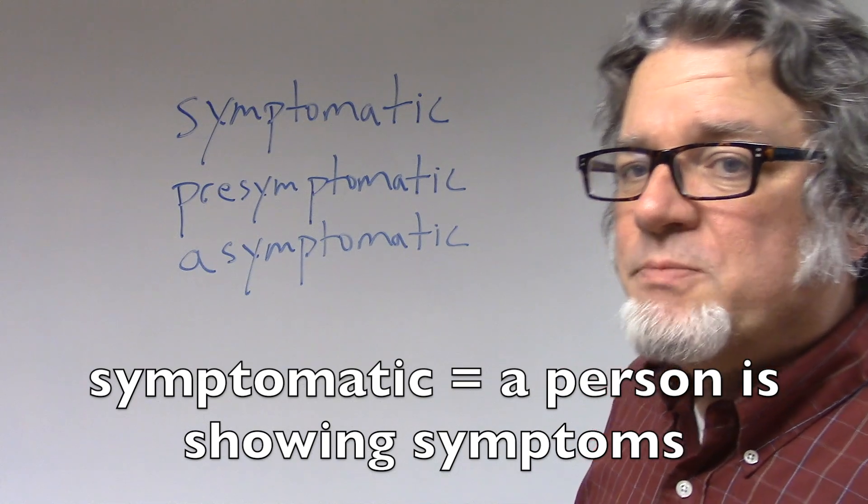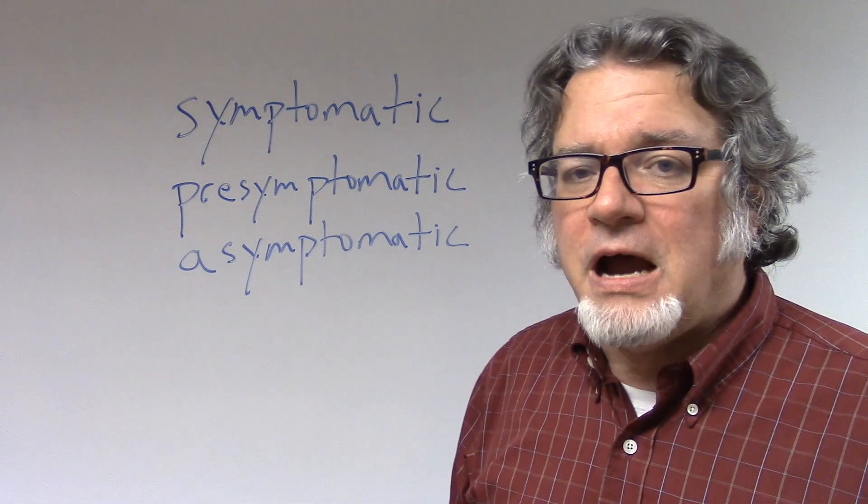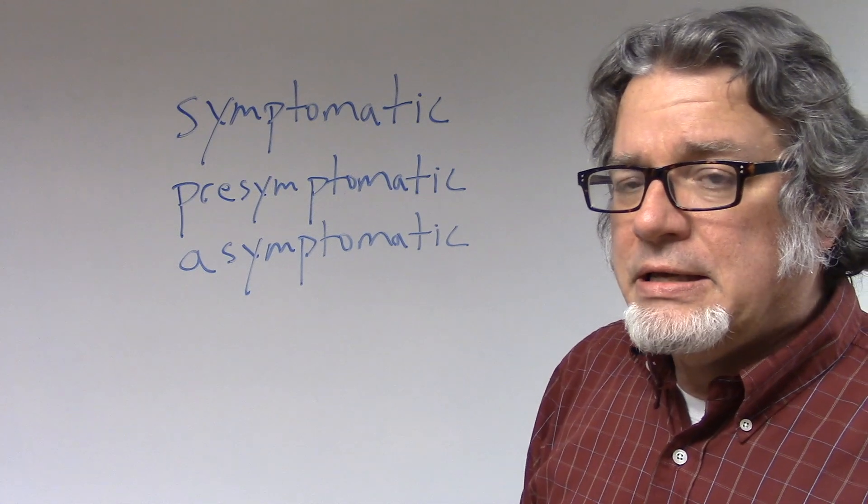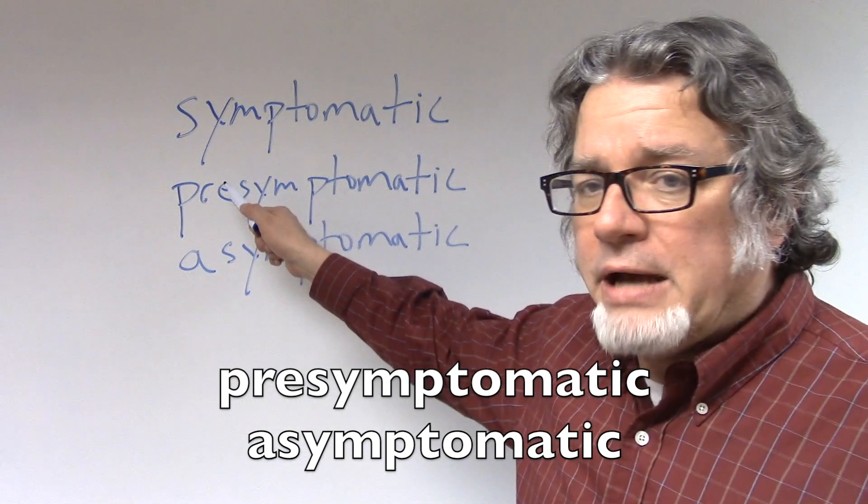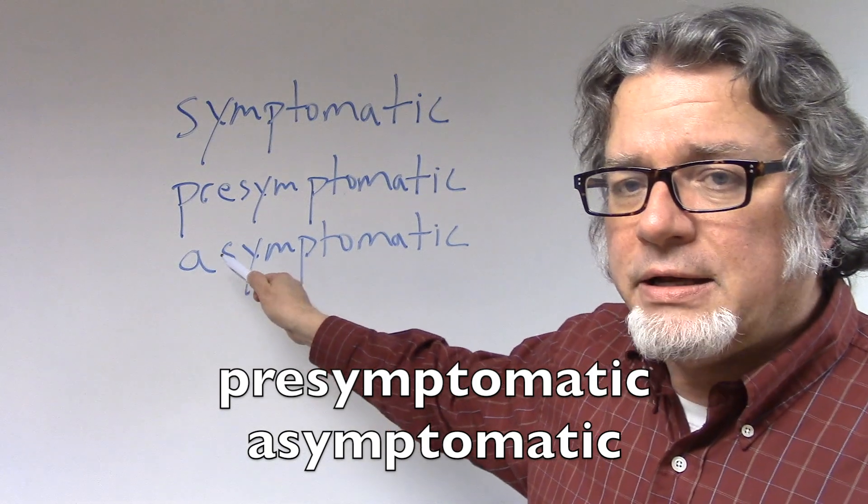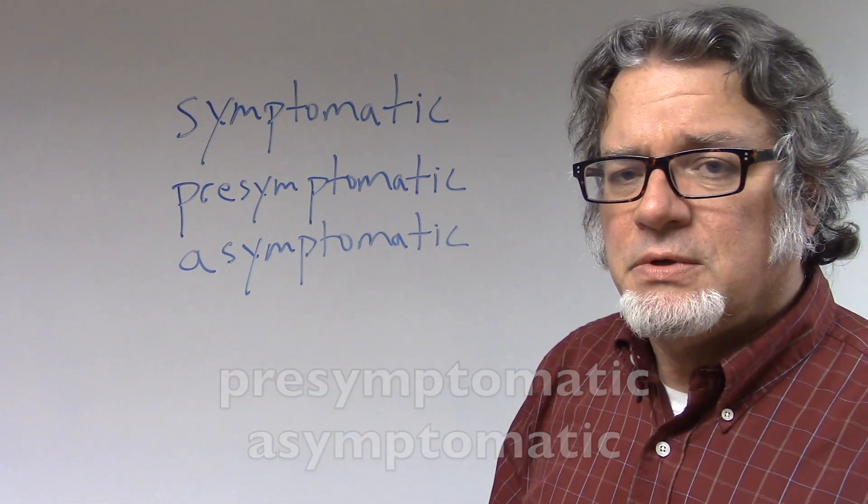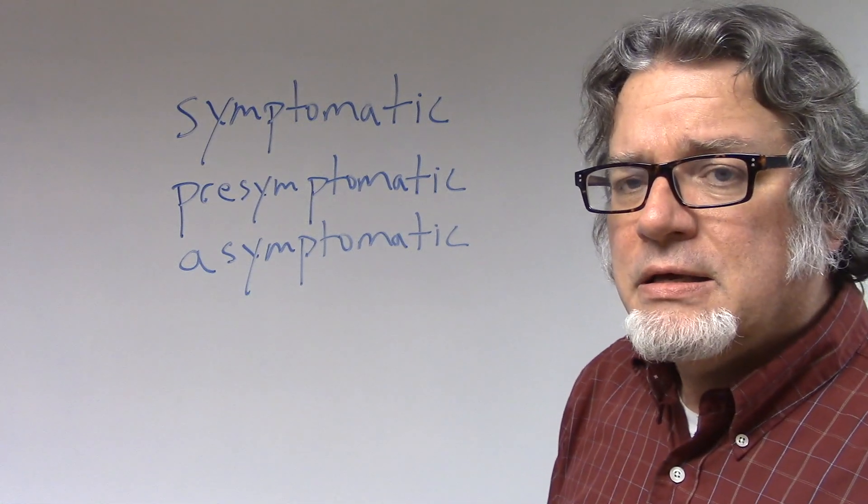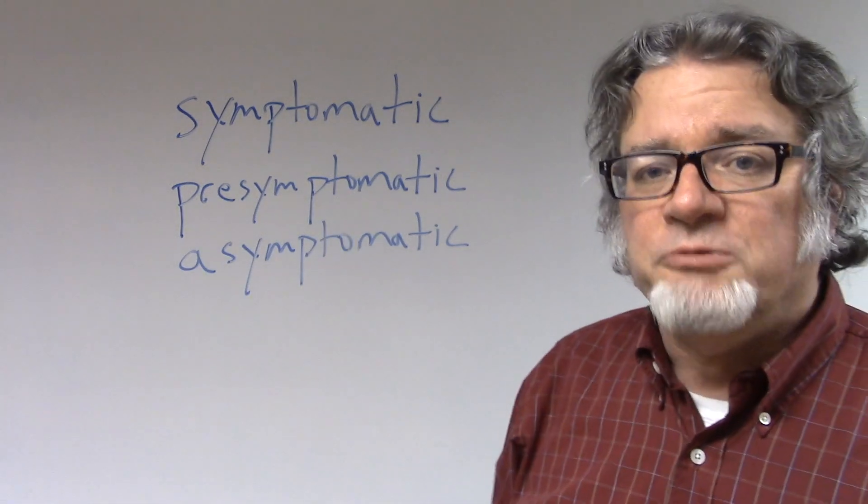A person who is symptomatic is showing symptoms indicating that he or she has the virus. But in this case, the coronavirus is being spread, or it's thought that it's being spread, by people who are pre-symptomatic. They're not showing symptoms yet. Or they're asymptomatic. They have the virus, but they're not exhibiting any sort of symptoms. Or their illness is fairly mild, but they have the virus and they're spreading it to other people without anyone realizing it.